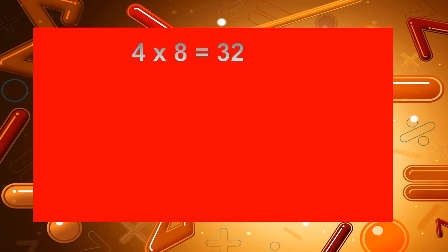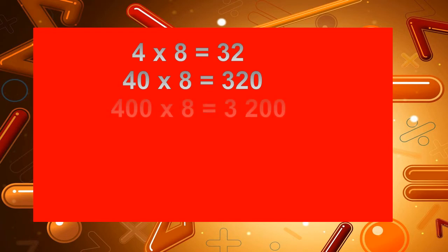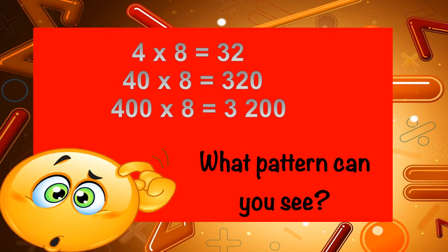Take a look at this example. 4 times 8 is equal to 32. 40 times 8 is equal to 320. 400 times 8 is equal to 3,200. What pattern can you see?